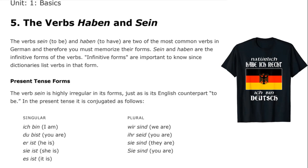We'll consider first the present tense form of 'sein.' This is highly irregular in all of its forms. In the first person singular it's 'ich bin' — I am; then 'du bist' — you are; 'er ist,' 'sie ist,' 'es ist,' etc. In the plural, it actually starts with an S, much like 'sein,' whereas it starts with a B or I in the singular forms. You have 'wir sind,' 'ihr seid,' 'sie sind.'